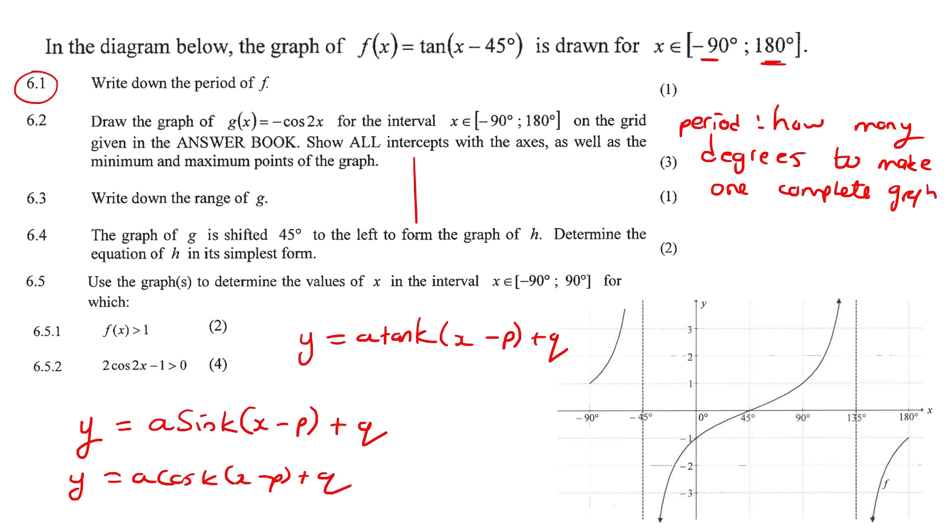Now, we need to understand what period is. Period is how many degrees to make one complete graph. We should know for a normal sin and cos, it is 360. A tan graph, a normal tan graph,